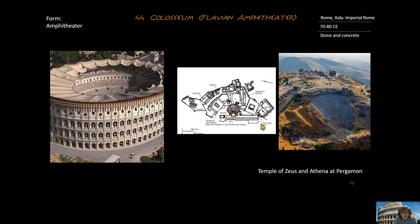The form of this is that it is an amphitheater — 'amphi' means two theaters. This image of the Temple of Zeus and Athena at Pergamum shows their Acropolis with the theater carved into the hillside. That was the Greek version of theaters. Roman engineering allowed the Romans to take that theater, make it freestanding so it didn't have to be against a hill, and essentially double the size, making it a freestanding amphitheater.